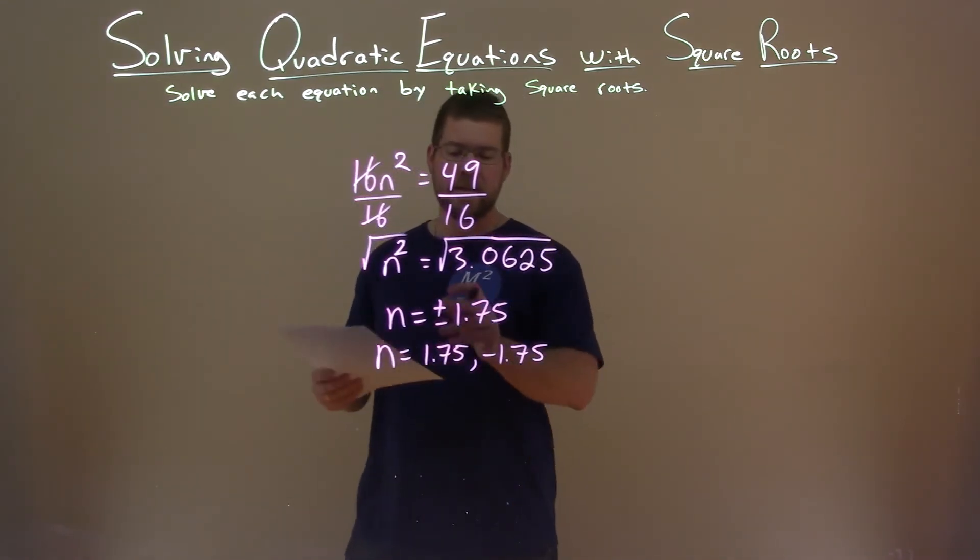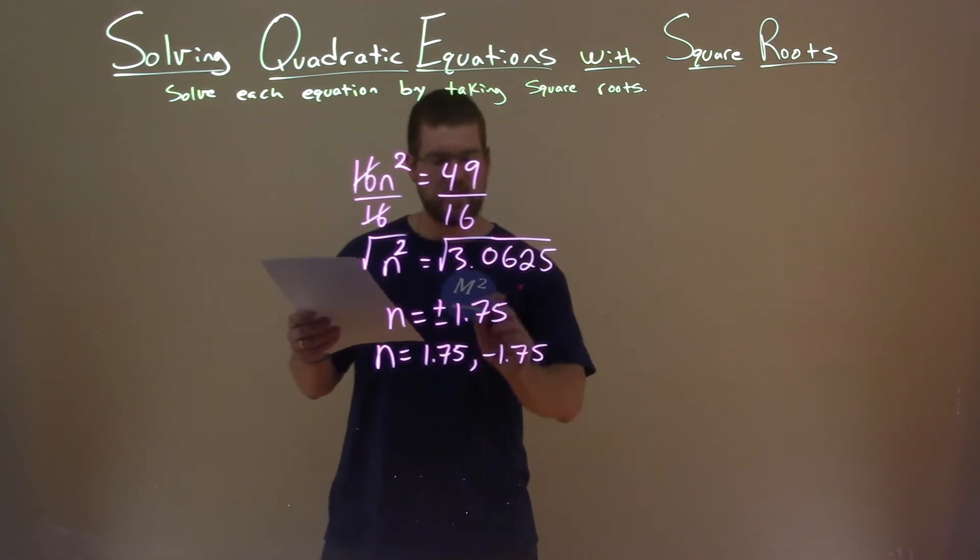So again, our final answer: n equals positive 1.75 and a negative 1.75.